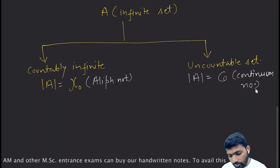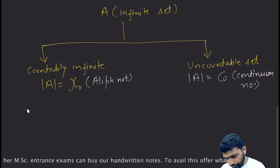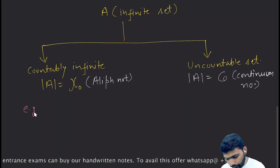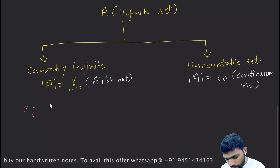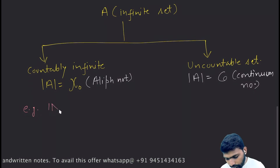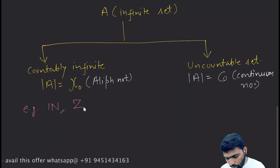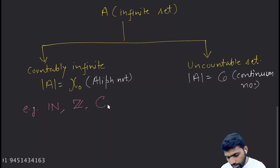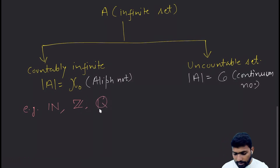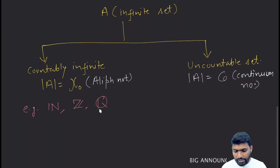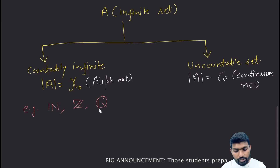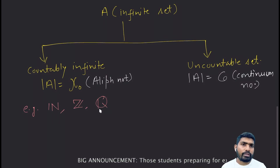Some examples of countably infinite sets are: the natural number set, the set of integers, and the rational number set. These are some examples of countably infinite sets.